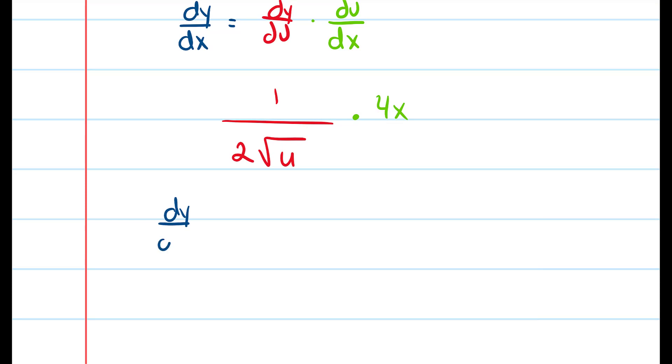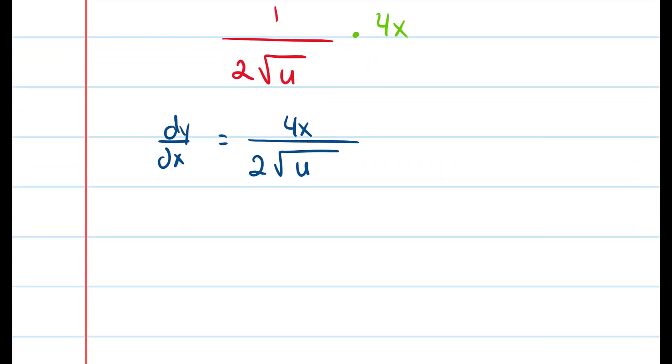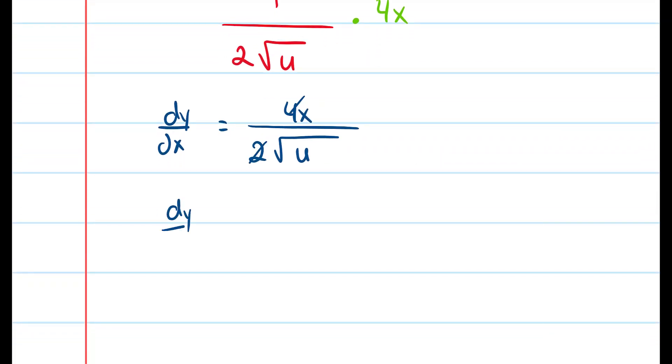So I get dy/dx is equal to 4x over 2 square root of u. Here we can simplify the 4 and the 2. So I get dy/dx is equal to 2x over the square root of u. But because we have a u in our answer we have to get rid of that. So I have 2x divided by the square root of 2x squared plus 1.